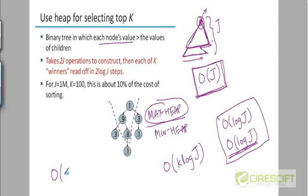So the total time will be order of J plus K log J. And assuming K is much less than J, this is pretty much linear time in J.